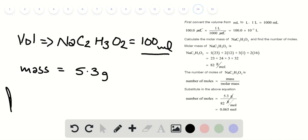We have the molar mass of NaC2H3O2 by adding the atomic weight of all the constituent elements. The molar mass turns out to be 82 grams.